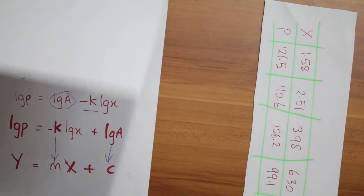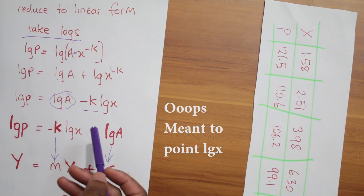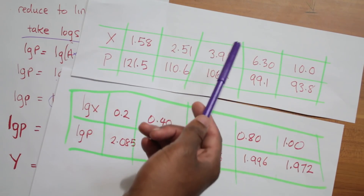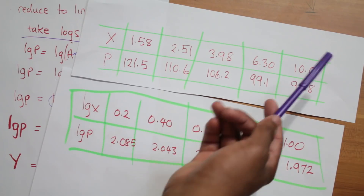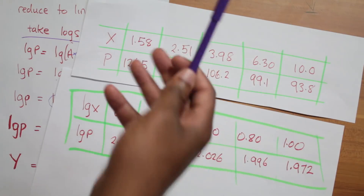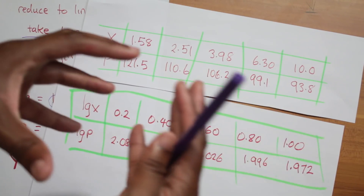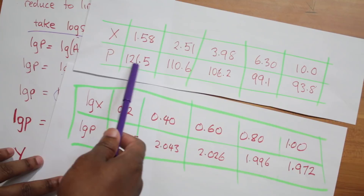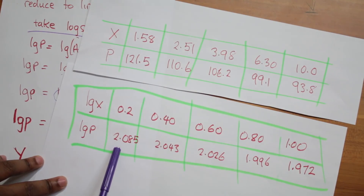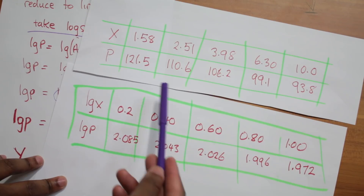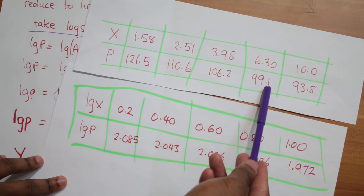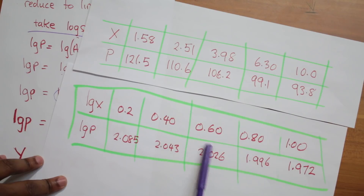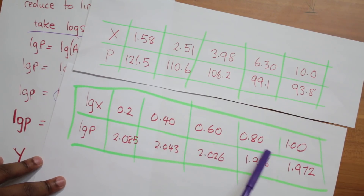They want you to plot a graph of the linear stuff, so you need values of log of p and log of x. Take this table and find the log of each value — just press log in your calculator and put the results in. Notice how log of 10 is 1, log of 100 is 2, log of 1000 is 3. Logs take big numbers and compress them into small numbers. So log of 121 will be just over 2, and values under 100 will be under 2.